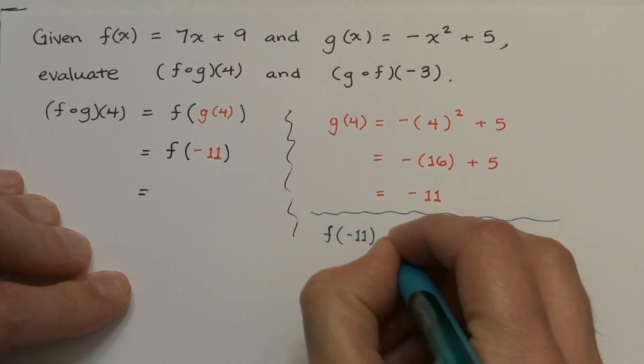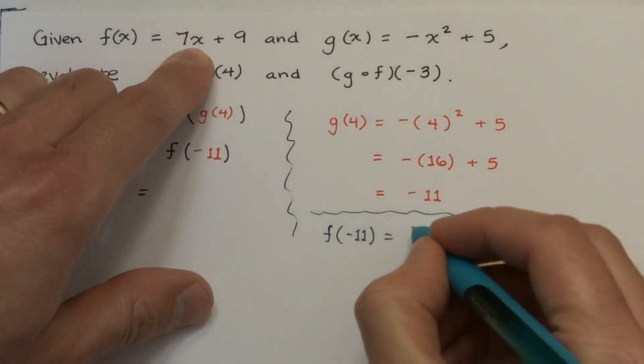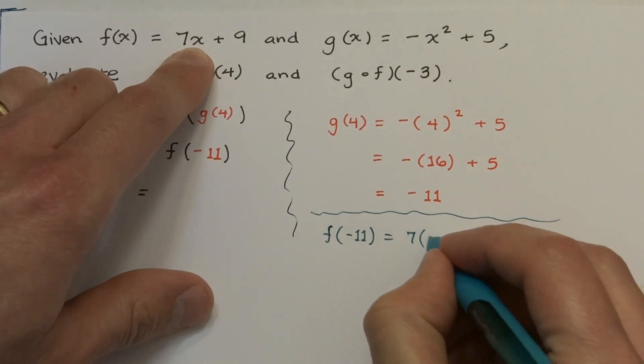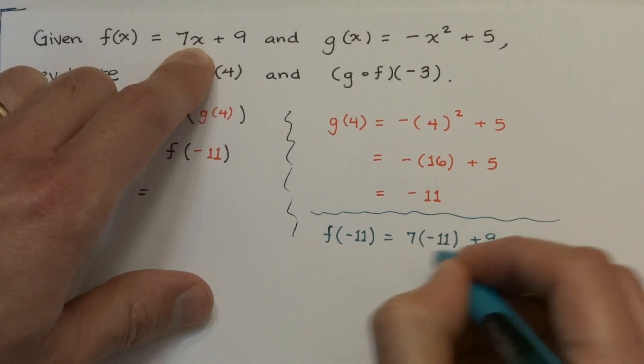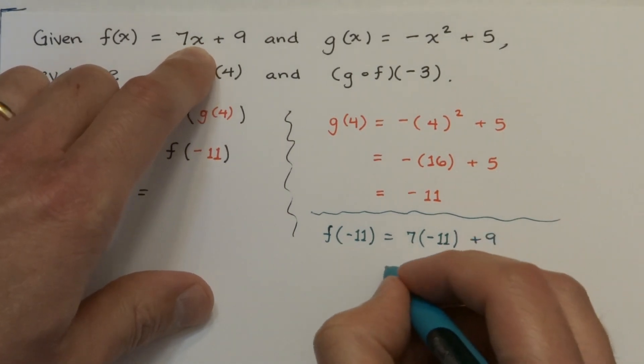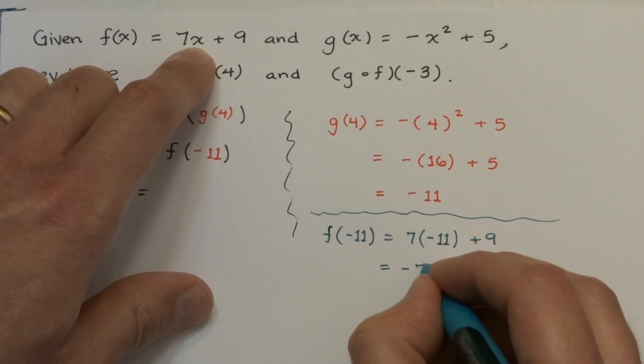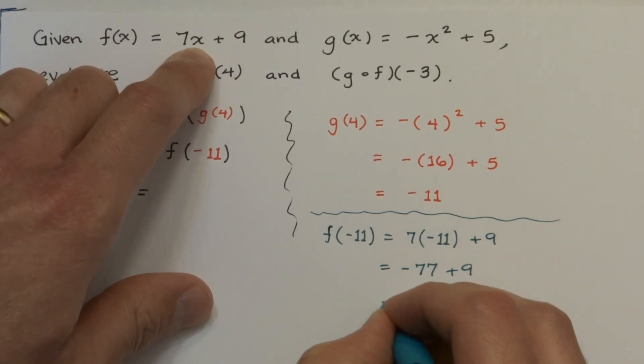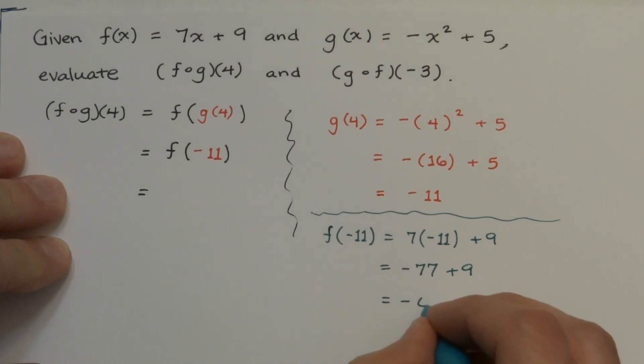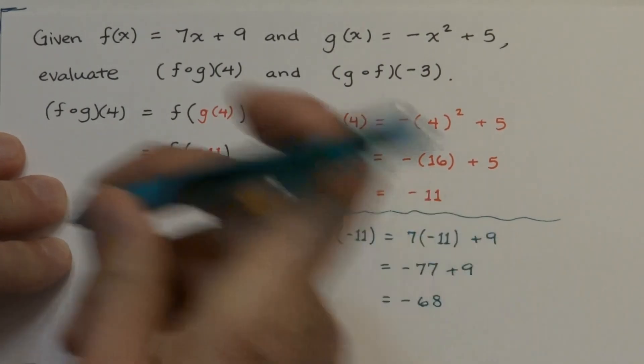So f of negative 11, again we're just using this function up here, f, replacing the x with the input value negative 11, and we're just going to do some arithmetic. So we end up with negative 77 plus 9, and we combine these two, we get negative 68.